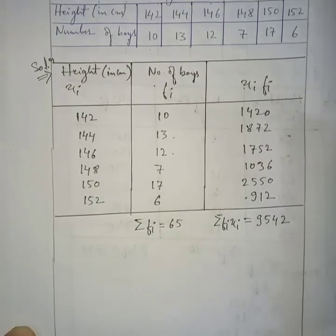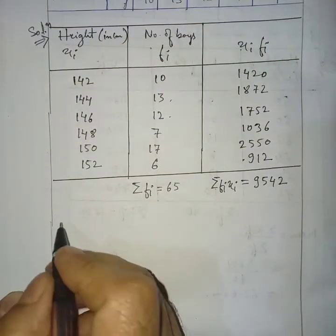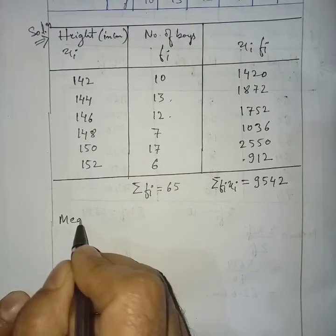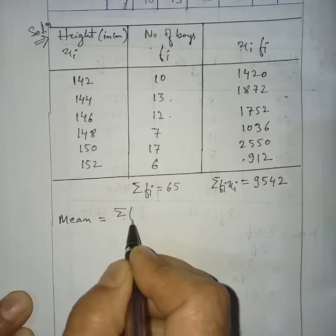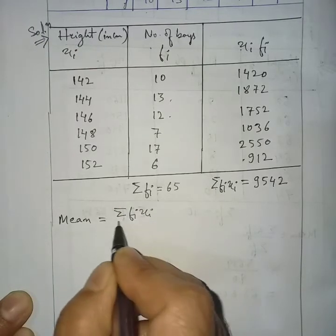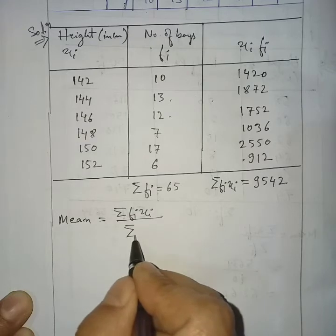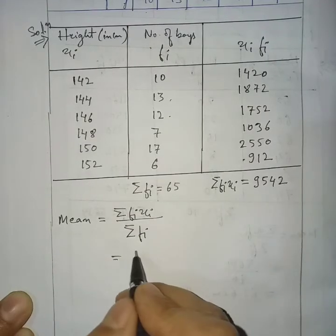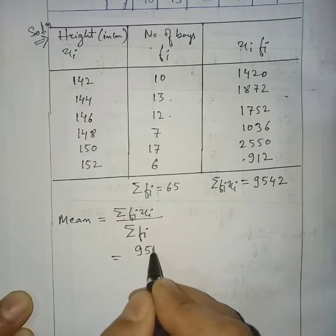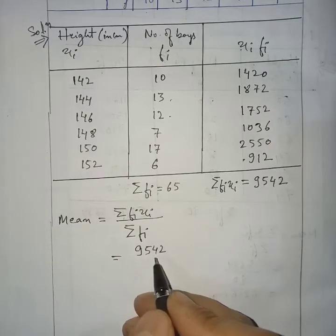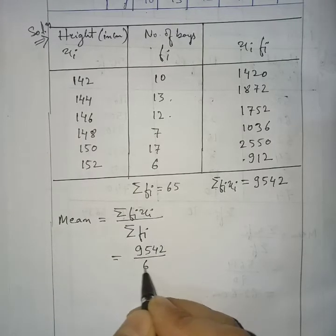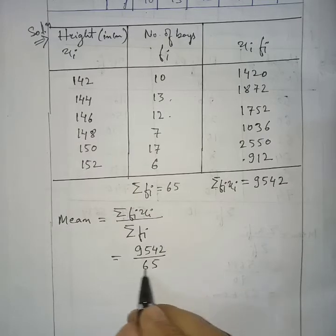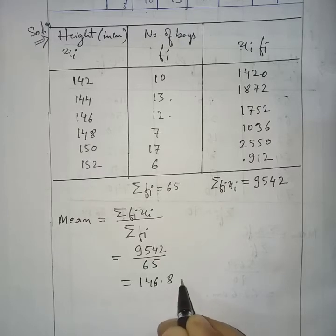Using the mean formula: Mean = Σ(fi × xi) ÷ Σfi = 9542 ÷ 65 = 146.8 centimeters. So the mean height of the boys is 146.8 cm.